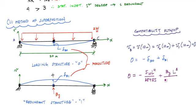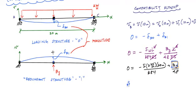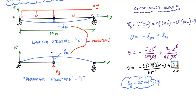For a simply supported beam of length 20 meters with a uniform load, the midspan deflection delta B0 equals minus 5WL⁴ over 384EI. For a simply supported beam with a concentrated load BY at midspan acting upward, the deflection is BY times L³ over 48EI. The EI terms cancel out, as do the length terms. Substituting the numbers gives one equation and one unknown: BY equals 25 kilonewtons.